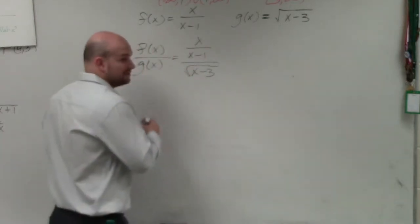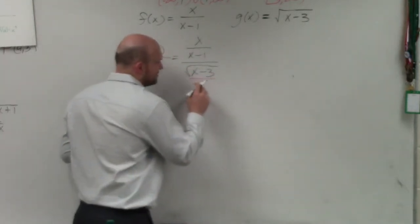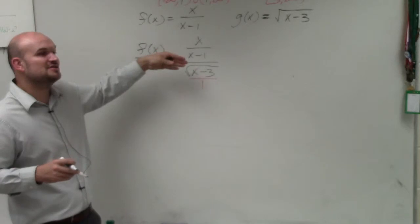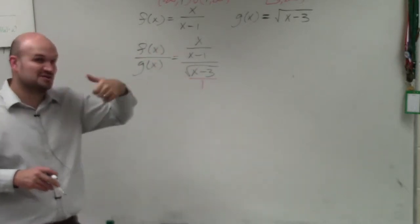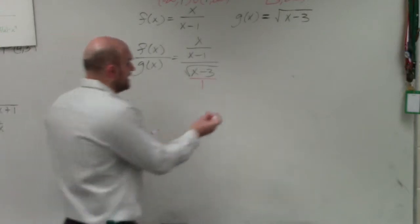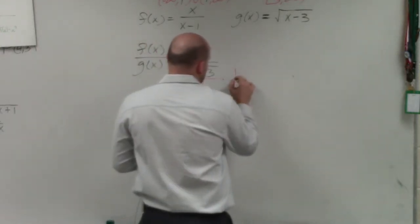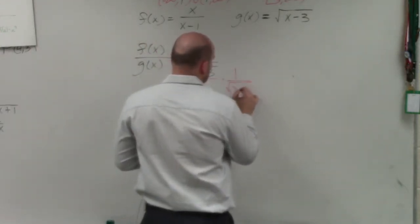Well, what I could do is I could rewrite this as a fraction. Therefore, I have a fraction divided by a fraction. And the reason why I like making a fraction in the denominator is because whenever I see a fraction in the denominator, I know that all I need to do is multiply by its reciprocal to get rid of that fraction.